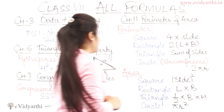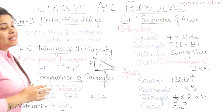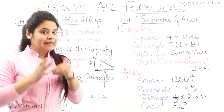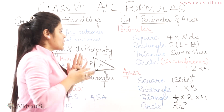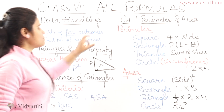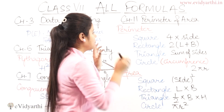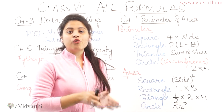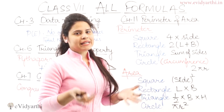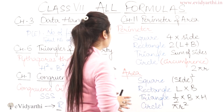Now moving to the next chapter, which is chapter number 11 — perimeters and area. Here you have to know the formula for a square: perimeter of a square is 4 into side.